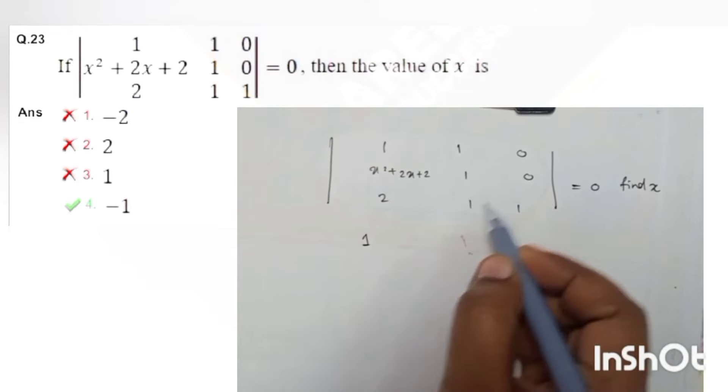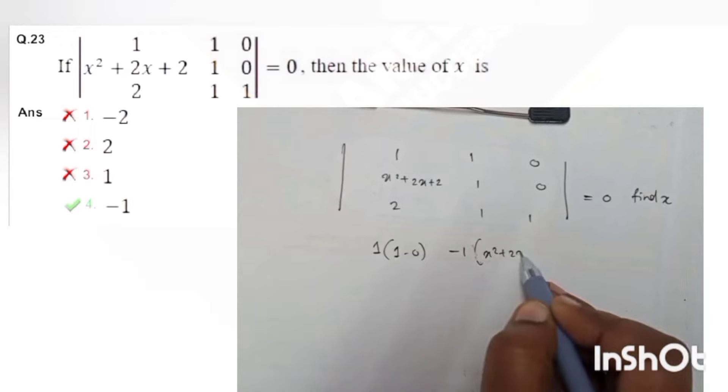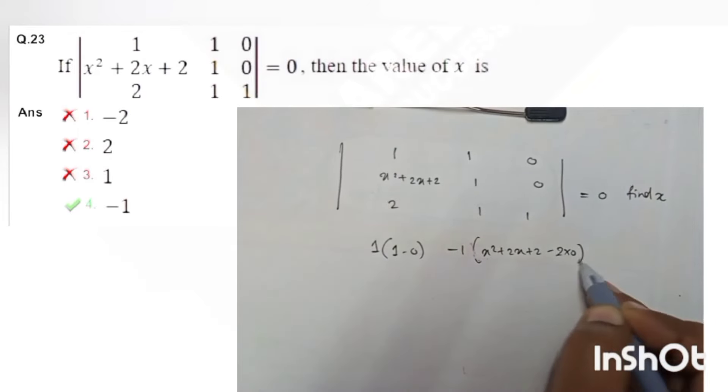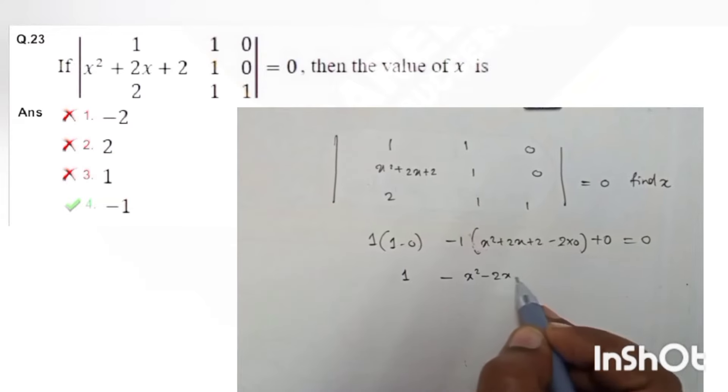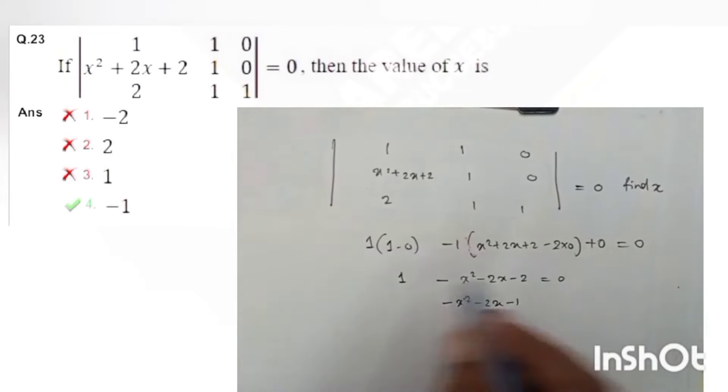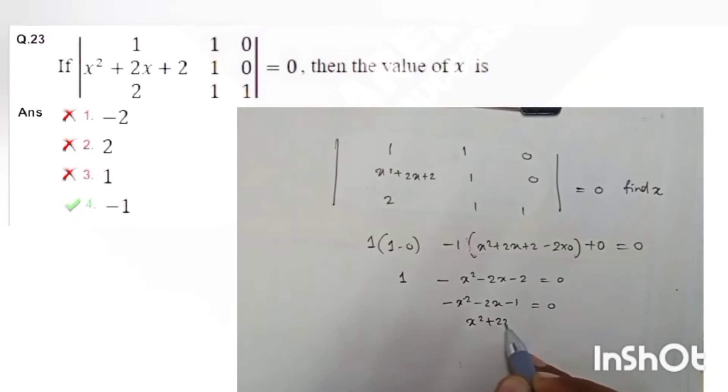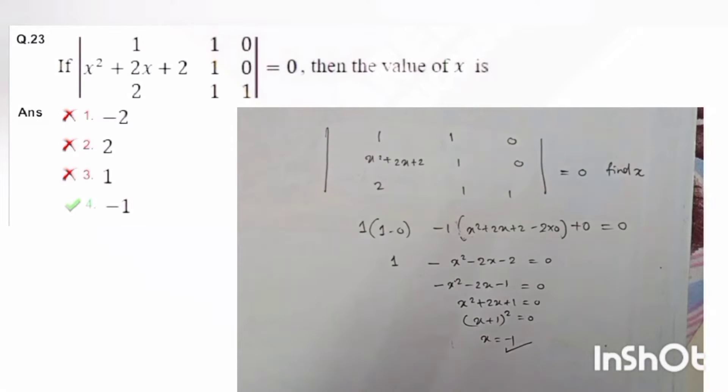Again this is a similar question where they have given that the determinant is equal to 0 and you have to find x. Simply solve this 3 by 3 determinant and then you will get the value of x. Here when we simplify it is coming out to be an equation x squared plus 2x plus 1 equal to 0 which is actually x plus 1 the whole square. So x is equal to minus 1.